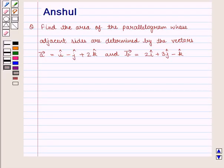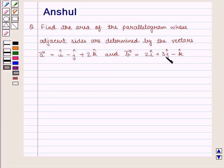Hello and welcome to the session. In this session, we are going to discuss the following question: Find the area of the parallelogram whose adjacent sides are determined by the vectors. Vector A is equal to i-cap minus j-cap plus twice of k-cap, and vector B is equal to twice of i-cap plus twice of j-cap minus k-cap.